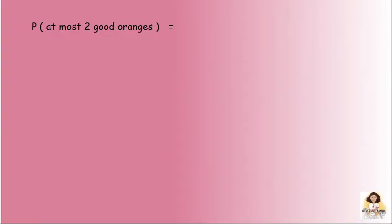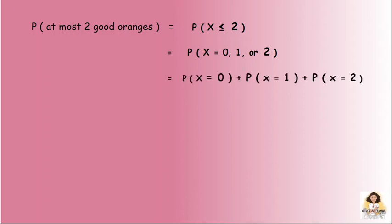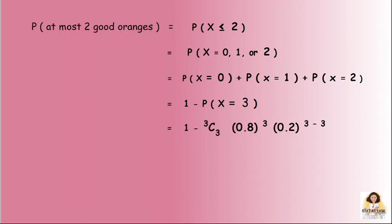Third part: at most 2 good oranges. At most means maximum 2, so P(X ≤ 2), covering X equal to 0, 1, and 2. Using the complement: 1 minus P(X = 3). That is 1 minus 3C3 times 0.8 raise to 3 times 0.2 raise to 0. 3C3 is 1, 0.2 raise to 0 is 1, so it becomes 1 minus 0.8 raise to 3. 0.8 raise to 3 is 0.512, giving the answer 0.488.